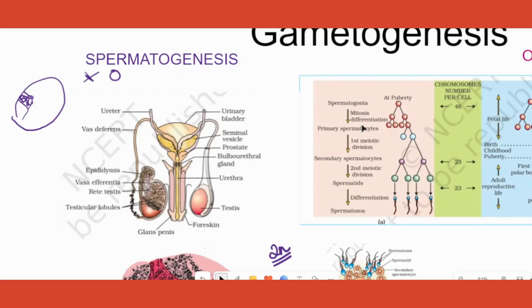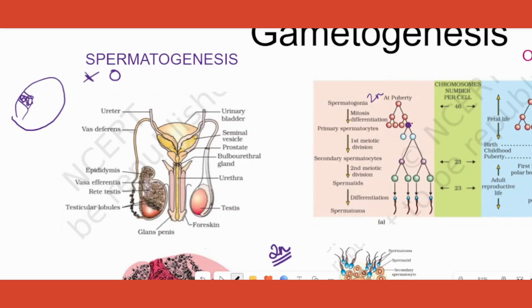Spermatogonia, which were one or two in number, became two, became four, and so on — millions in number — through mitotic division, where the chromosome number stays constant: 2n becomes 2n, 46 becomes 46 in the daughter cells. But primary spermatocytes — the special cells among the spermatogonia — undergo meiotic division. There can be so many spermatogonia but only a special few become primary spermatocytes.